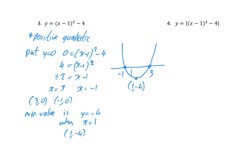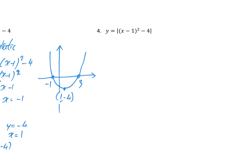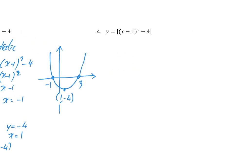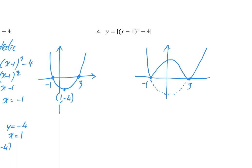Last thing for us to do in number 4 is to do the modulus of that same graph. I'm going to draw that graph out exactly as it was, except any bits that were underneath the axes are now going to get flipped up — I'll draw those as dashed lines. Any bits underneath get flipped up, so this point is now going to be (1, positive 4).